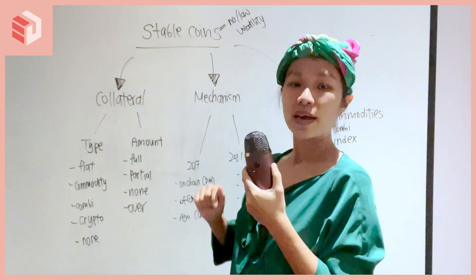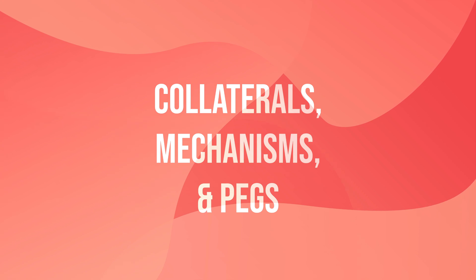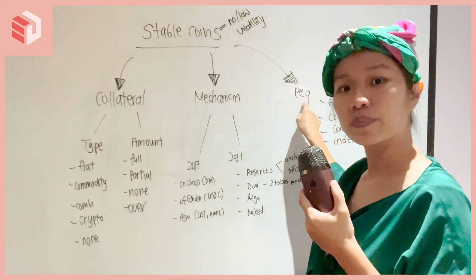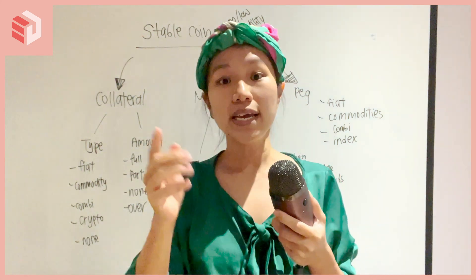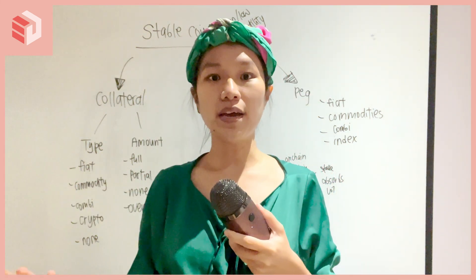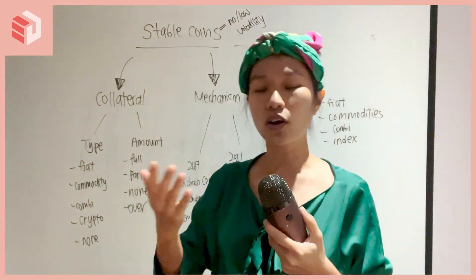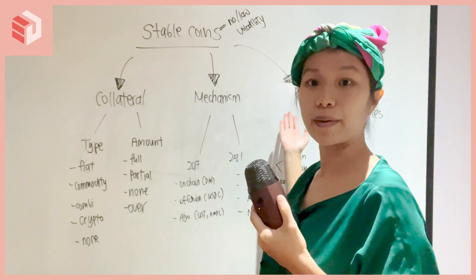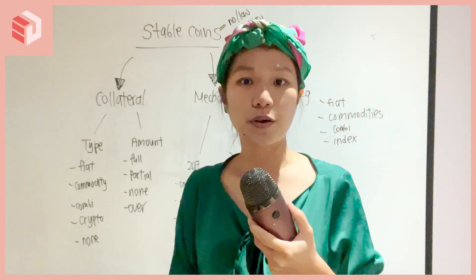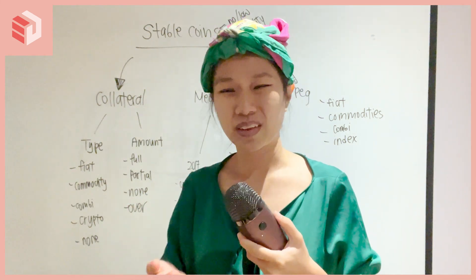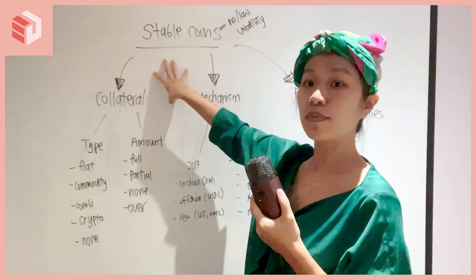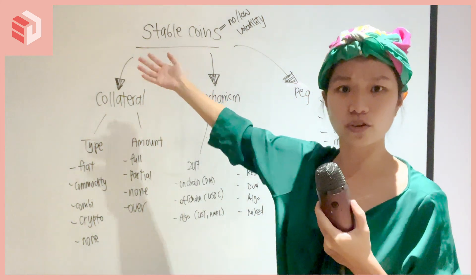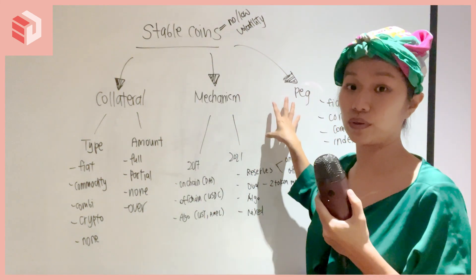Before we begin, I want to share how we're going to talk about stablecoins. We're going to talk about them in terms of collateral, mechanism, and PEG. Why PEG? Because a stablecoin is stable only relative to something. You PEG to something and it is stable relative to that. The Hong Kong dollar is soft-pegged to the US dollar, so you can say it's stable compared to the US dollar. You can't say the US dollar is stable compared to the Zimbabwe currency — that just doesn't make sense. So PEG is really important.